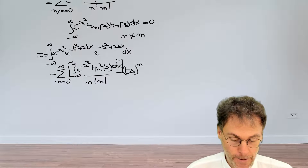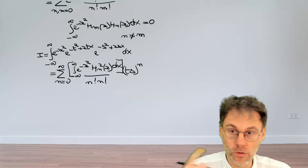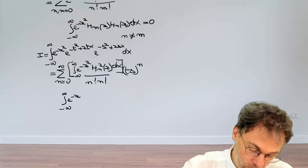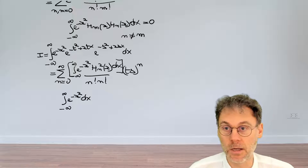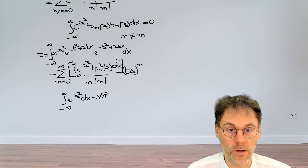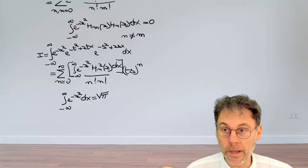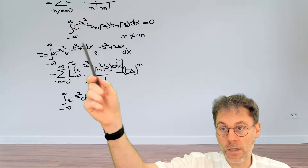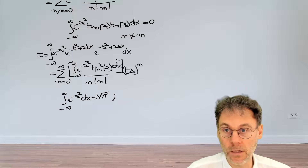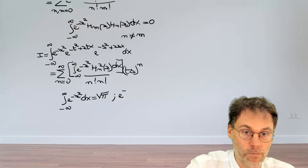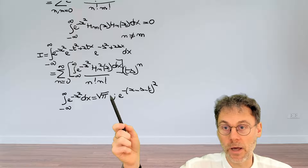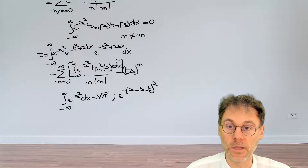The strategy is to calculate this left-hand side integral and write it as a series expansion, then identify like powers of t times s to extract the normalization integral. A useful auxiliary result is that the integral from minus infinity to plus infinity of exponential minus x squared dx equals the square root of pi — the area under a Gaussian. The hint is to rewrite the integrand such that exponential minus (x minus s minus t) squared appears.